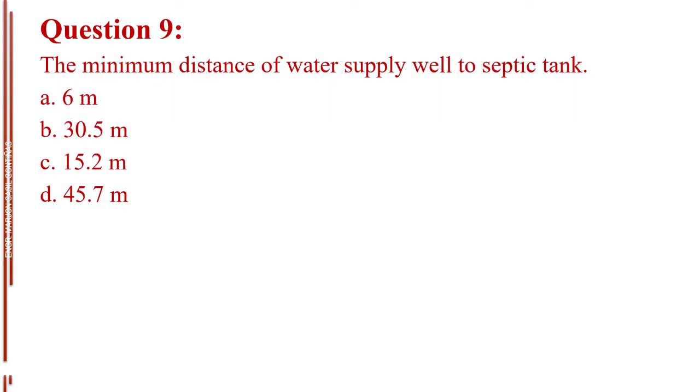Question number 9. The minimum distance of water supply well to septic tank. Letter A, 6 meters. Letter B, 30.5 meters. Letter C, 15.2 meters. Letter D, 45.6 meters. The answer is Letter C, 15.2 meters.